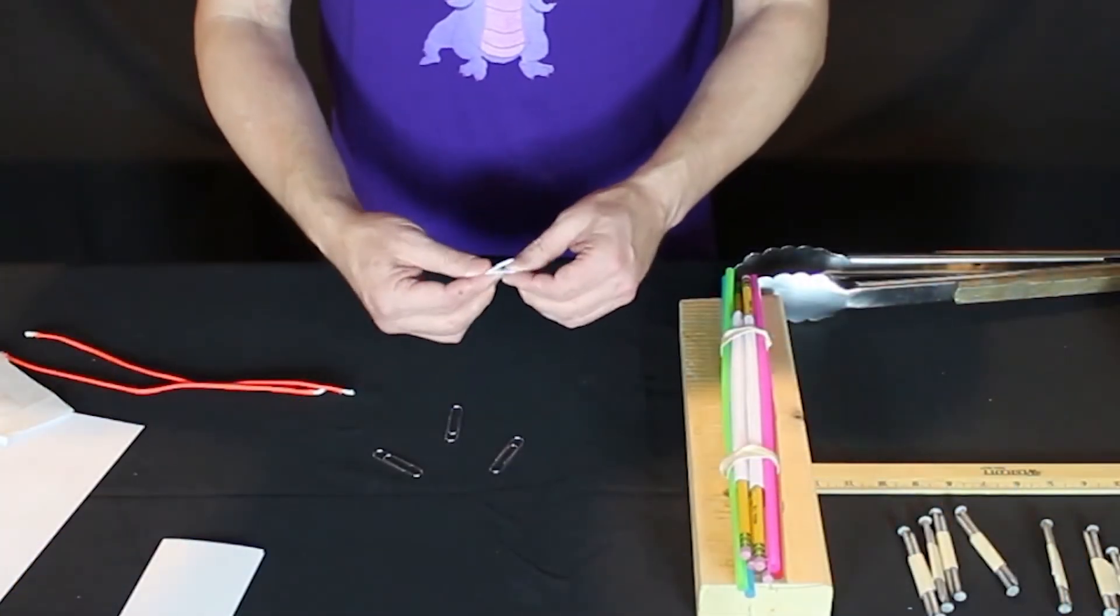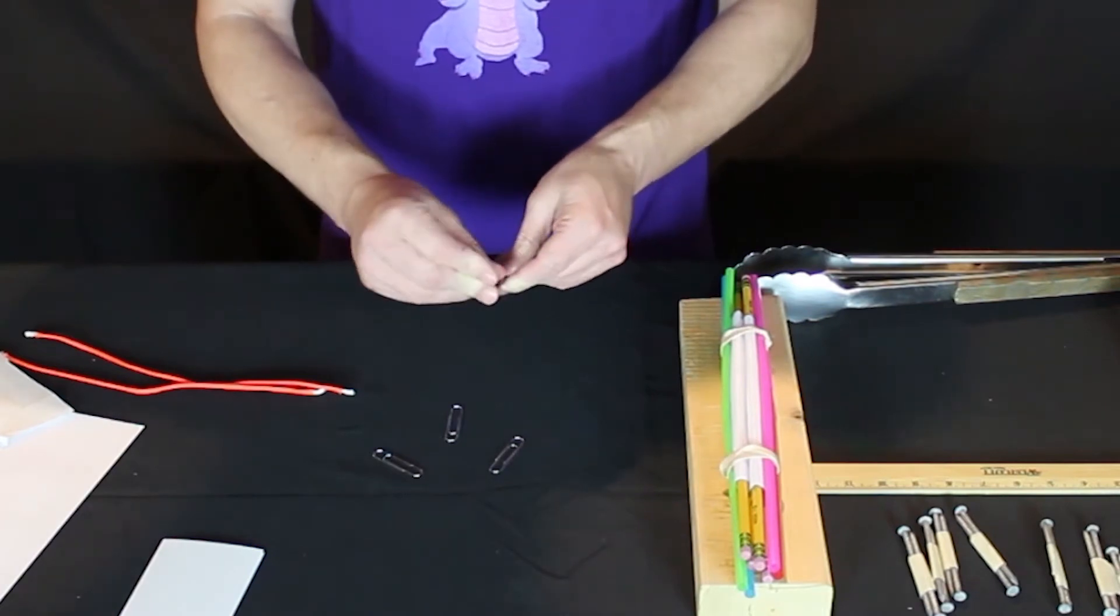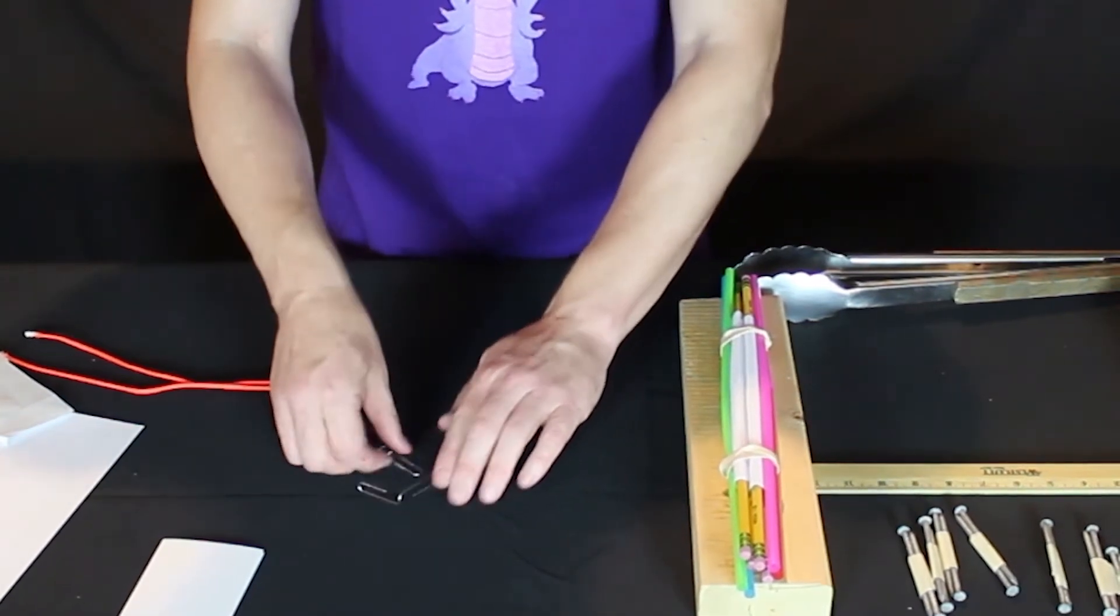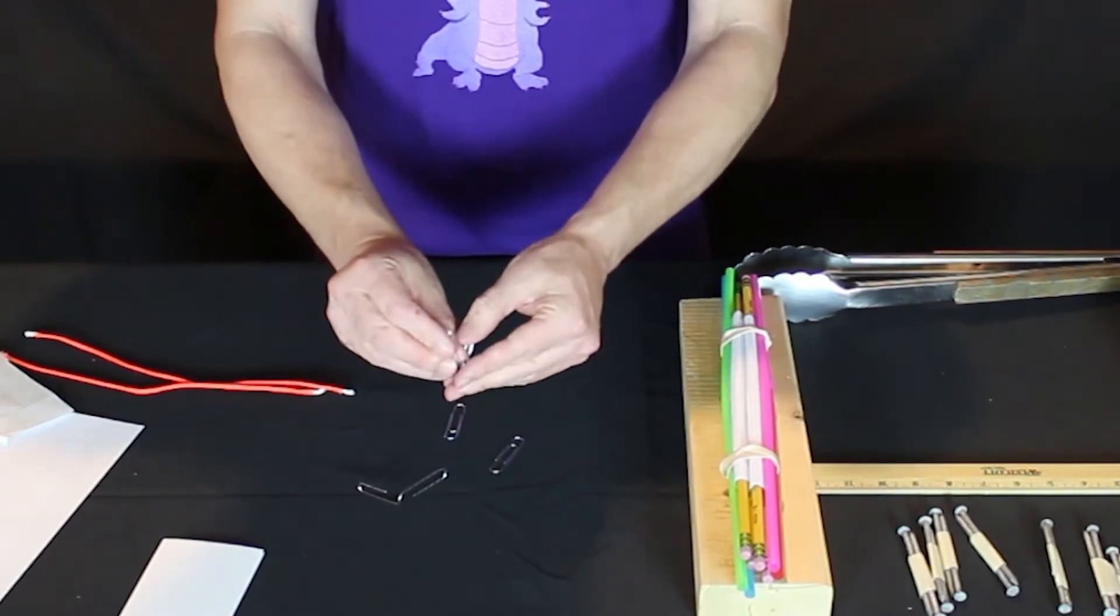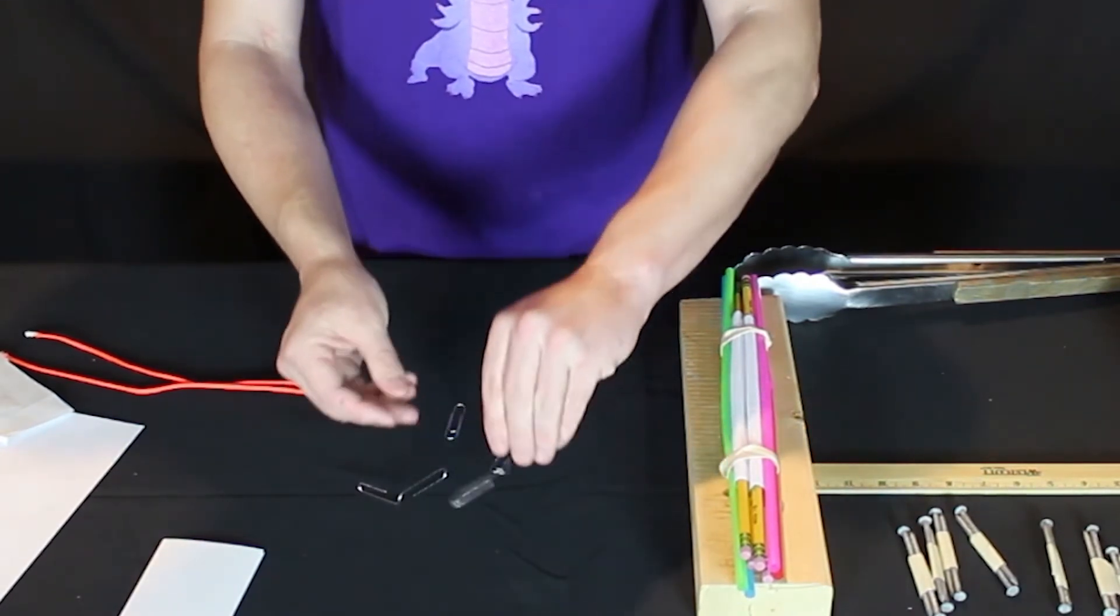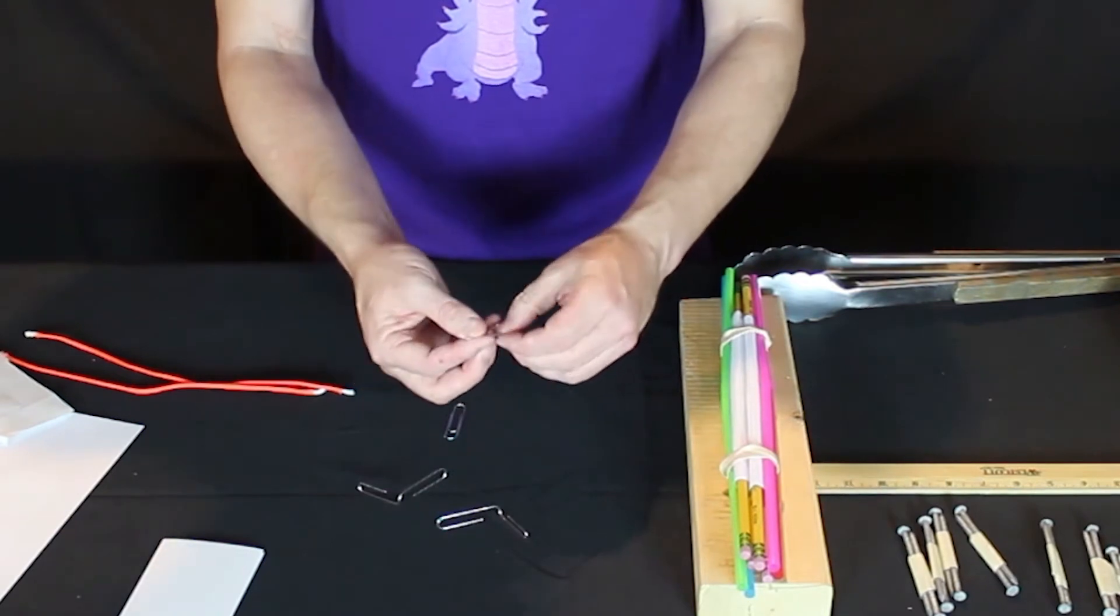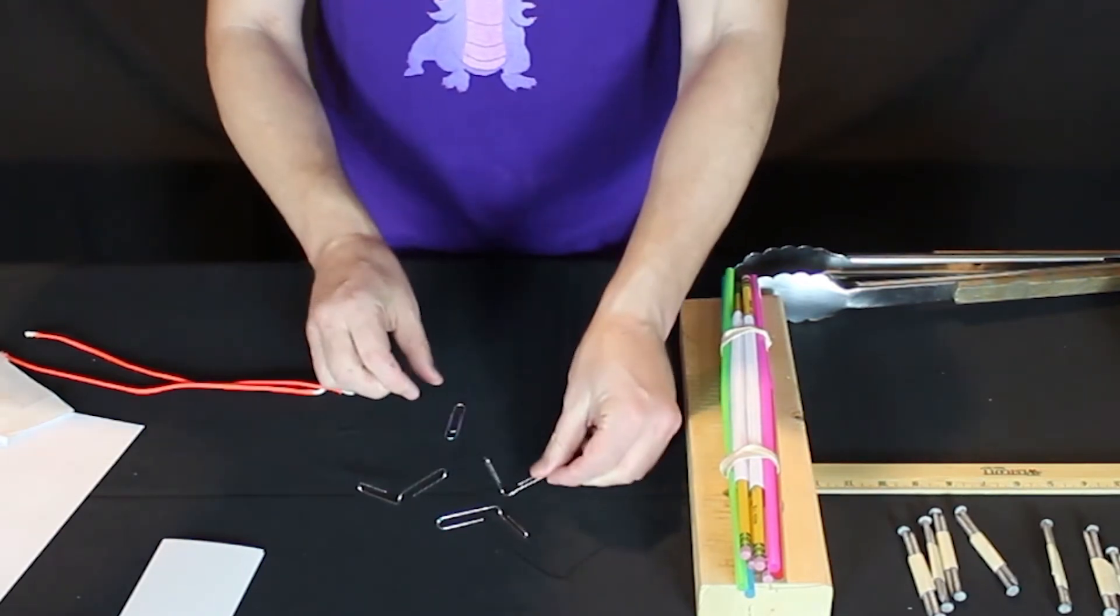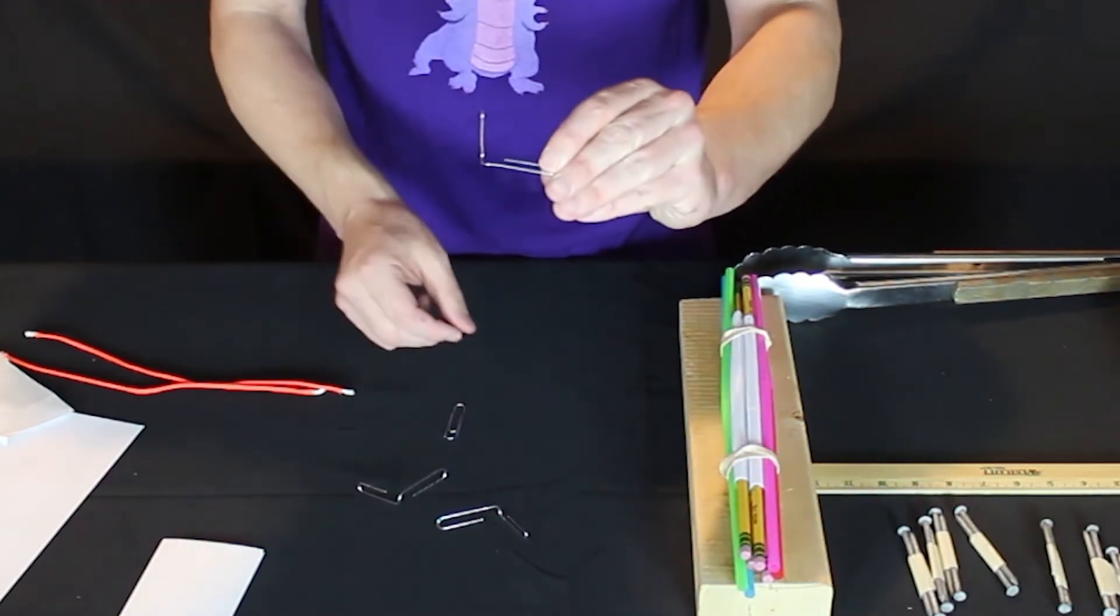As you've seen in many of my videos, I like to use paper clips and straws together. First thing we're going to do is bend them all up like we have in the past. Making little L's out of them.